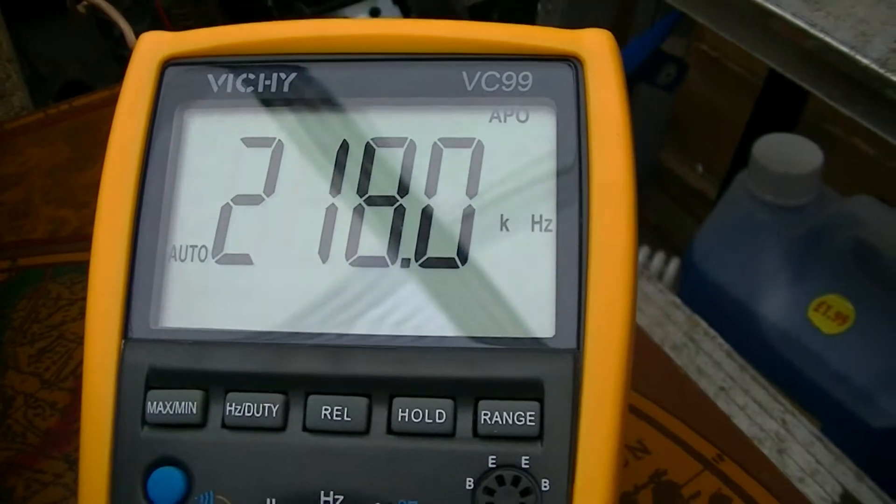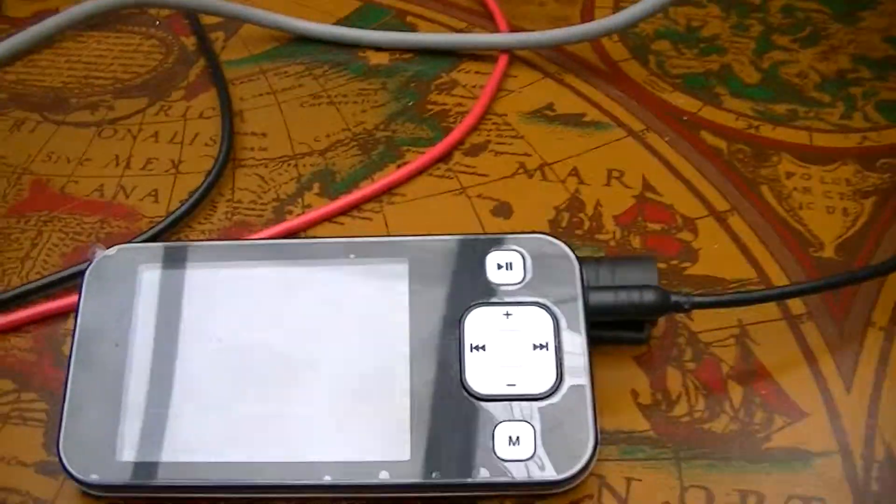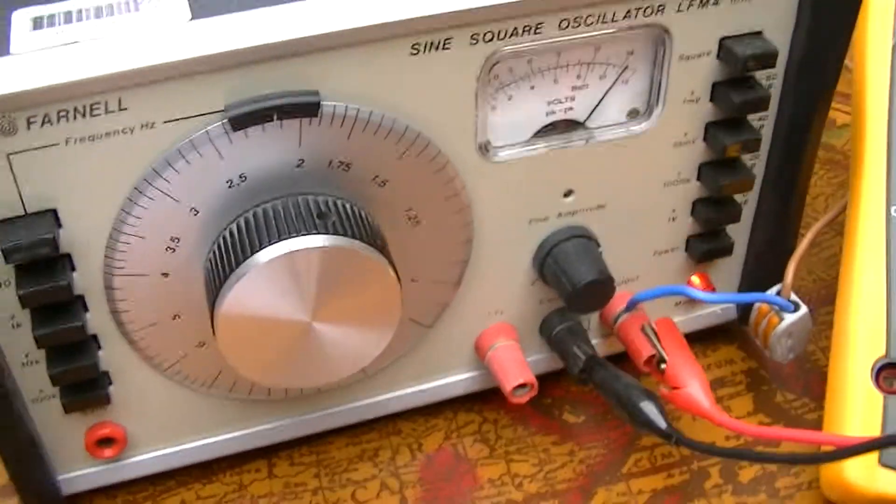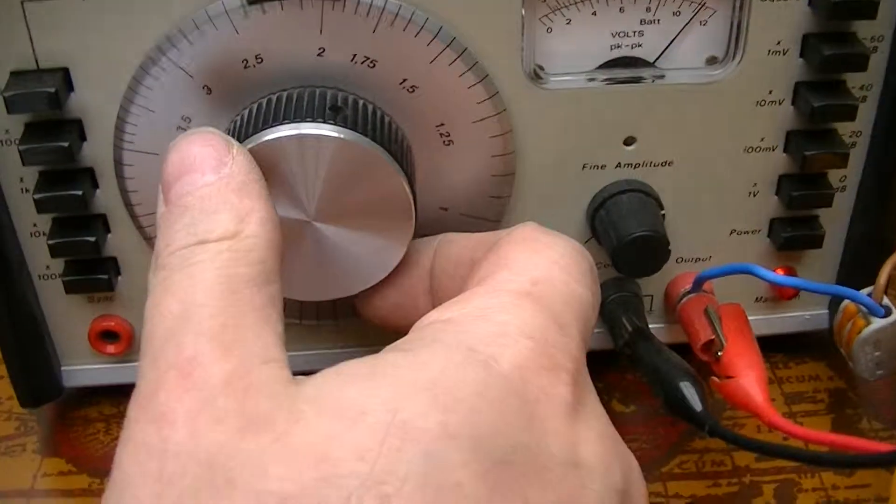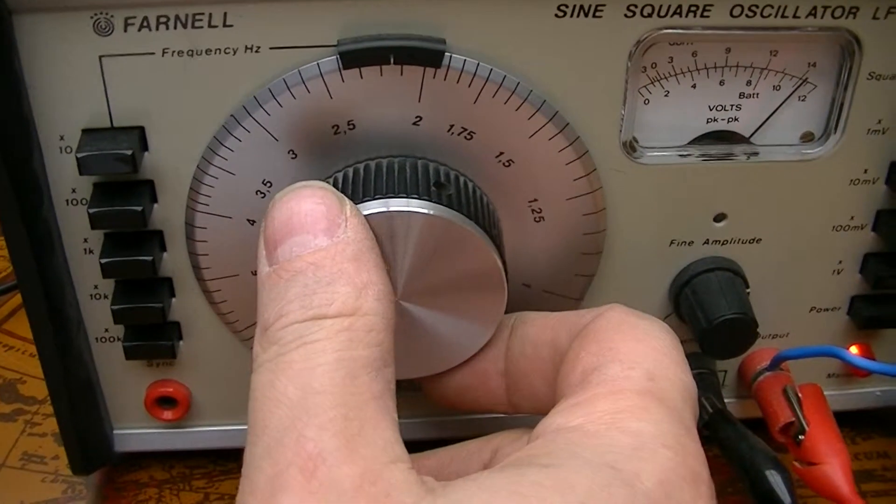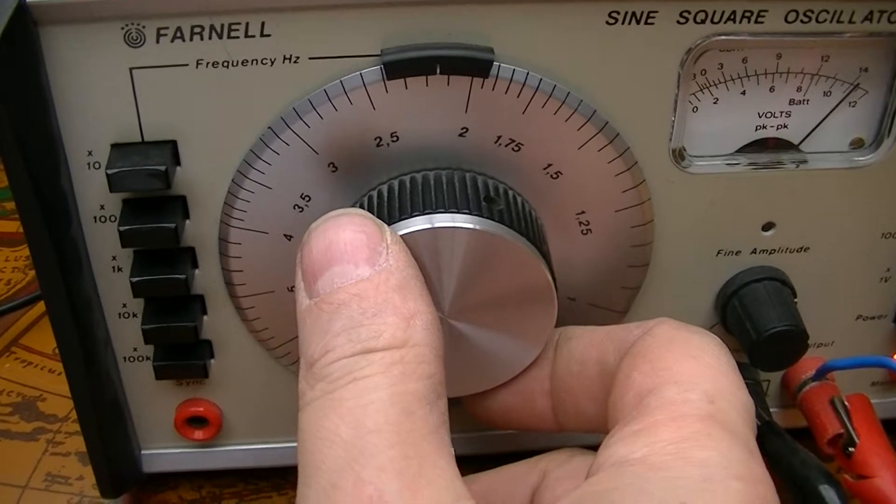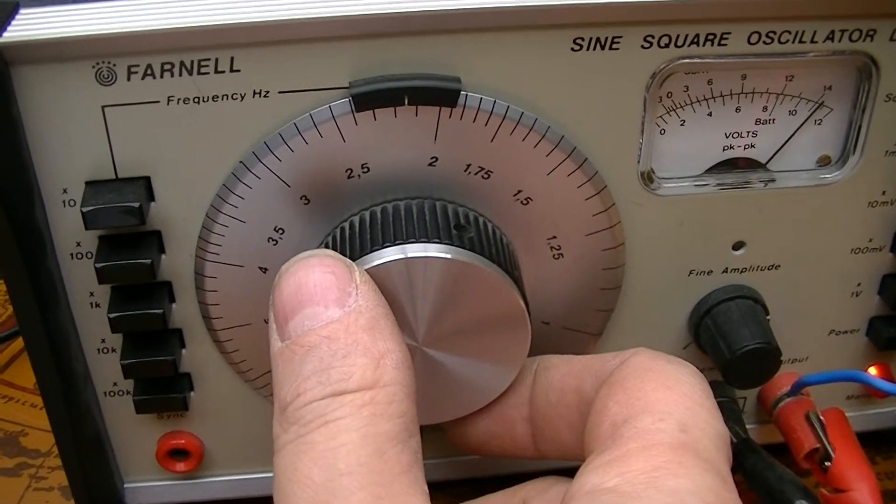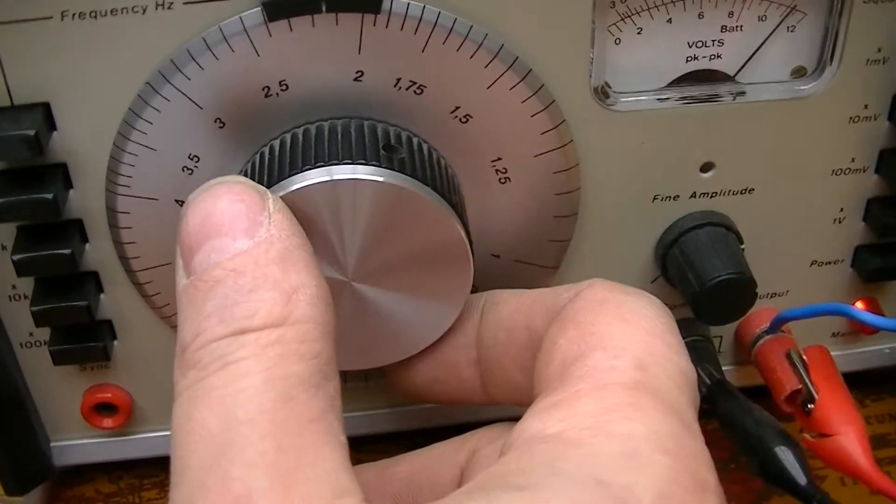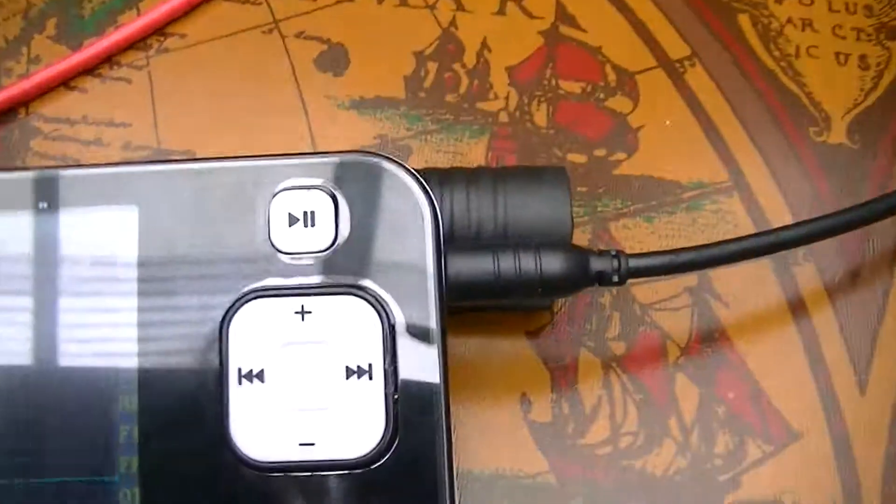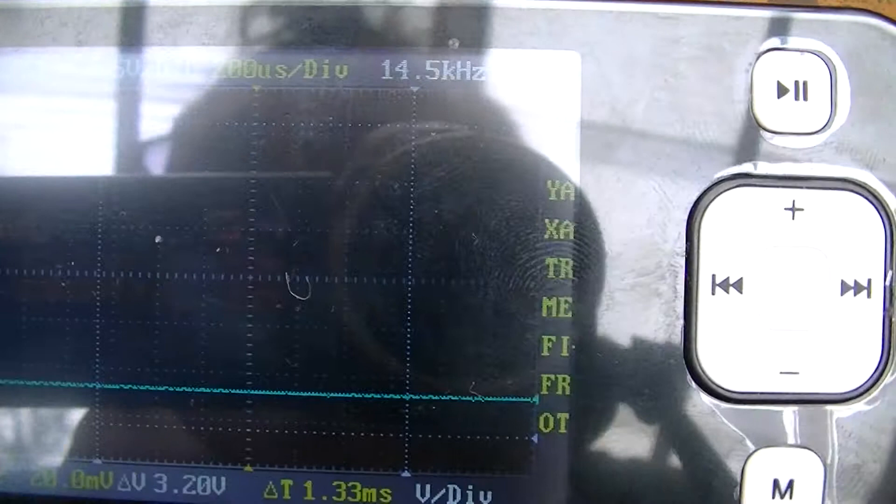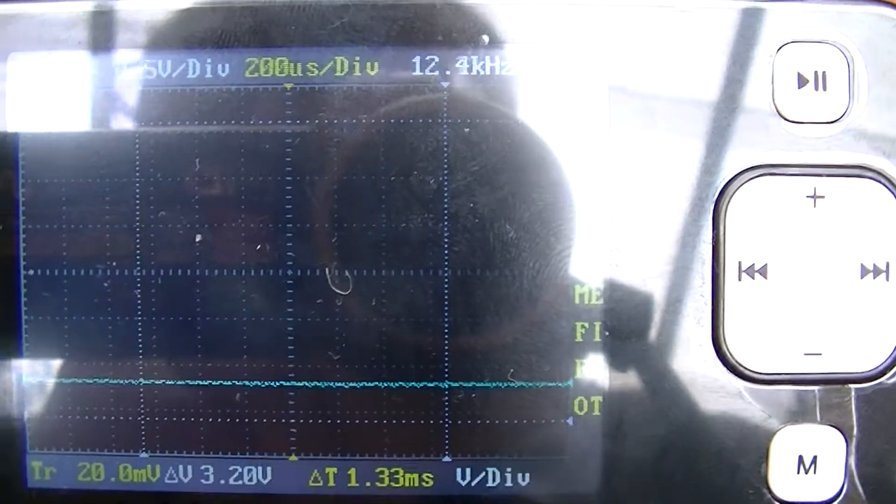Now I'm going to change the frequency on the signal generator. I'm looking for the peak to find the right frequency on the secondary coil, so I'm going to put it higher. We can see here.